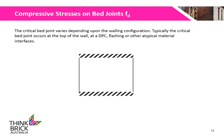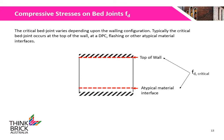The critical bed joint varies depending on the walling configuration. Typically, the critical bed joint occurs at the top of the wall, at a DPC, flashing, or other atypical material interface.